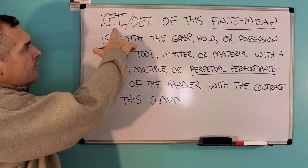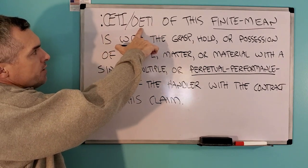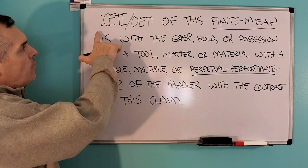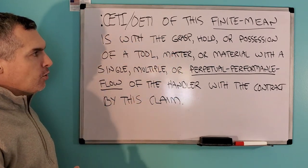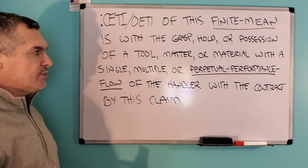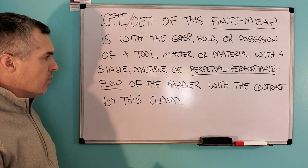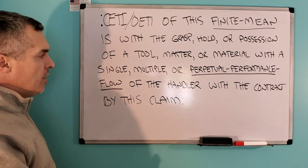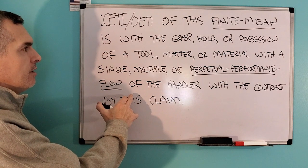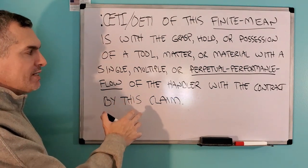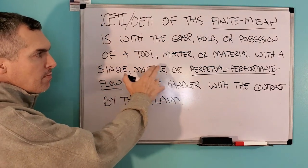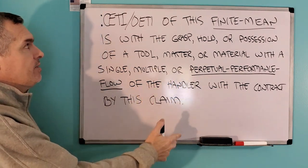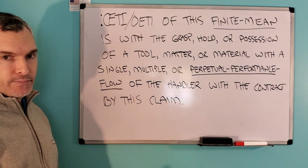I use the digraph OE as well as the OE separated. This is the way my finite mean reads: For the oiti, an oiti of this finite mean is with the grasp, hold, or possession of a tool, matter, or material with a single, multiple, or perpetual performance flow of the handler, with a single, multiple, or perpetual performance flow of the tool, matter, or material of the grasp, hold, or possession with this finite mean by the oiti and oiti.